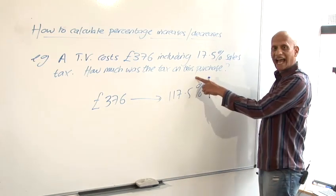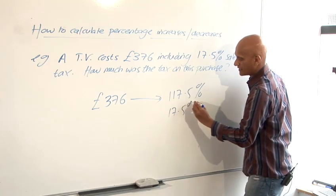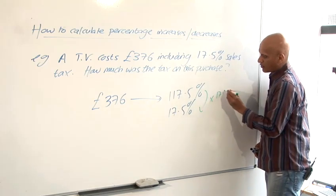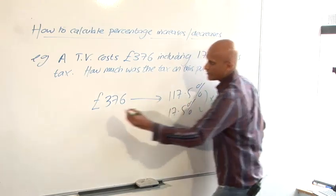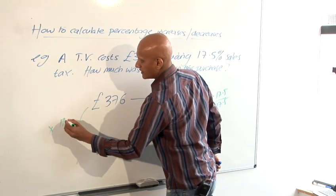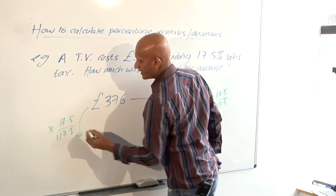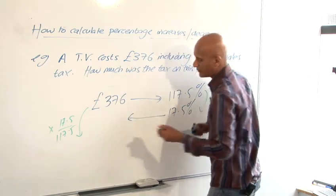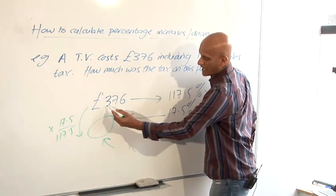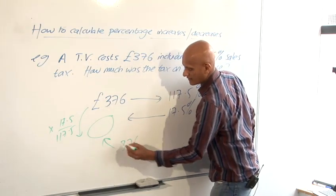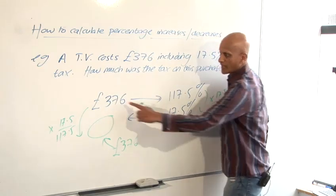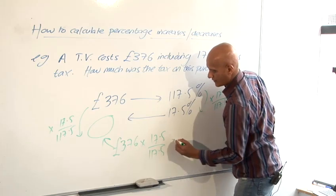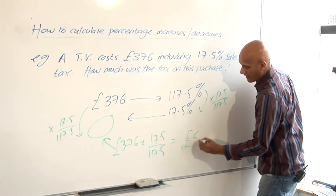We want to work out the tax and we know the tax is just 17.5% and so using our scale factor method times 17.5 over 117.5 and using the same scale factor here times 17.5 over 117.5 and so our answer which goes in here would be found by following this calculation, 376 pounds times 17.5 over 117.5, and again sticking in the calculator to get your answer, 56 pounds.